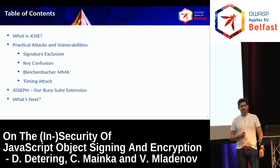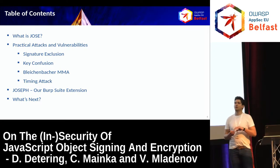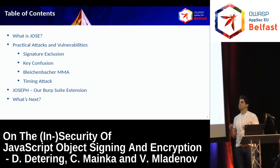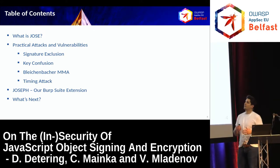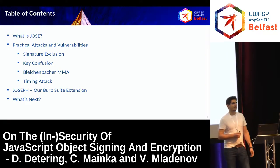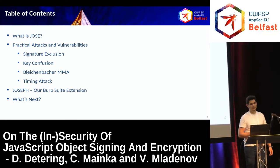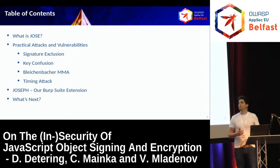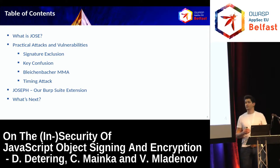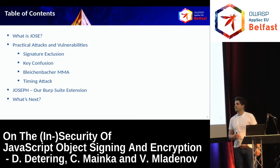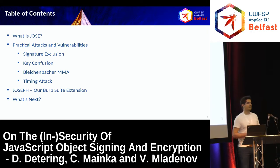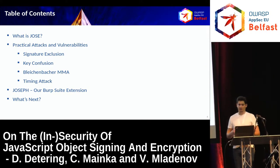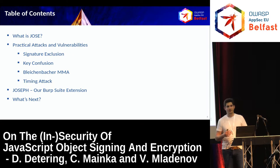What you might expect from today's talk is basically this: I will give a short introduction to what the JSON web family is, then show you some practical attacks and vulnerabilities — signature exclusion, key confusion, the Bleichenbacher million-message attack, and if we have enough time, a timing attack on certain libraries. Then I'll introduce our developed BurpSuite extension called Joseph, followed by a short summary and outlook.